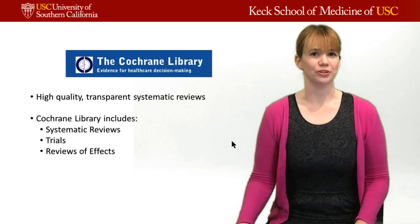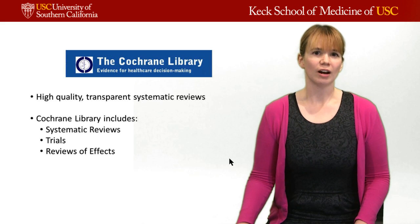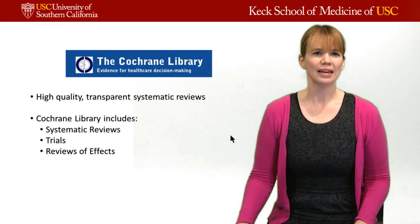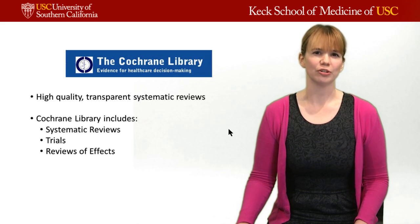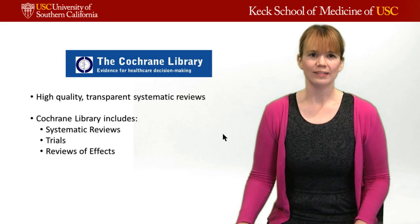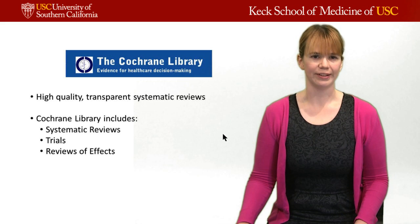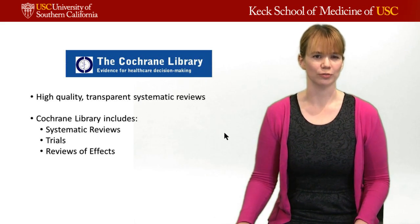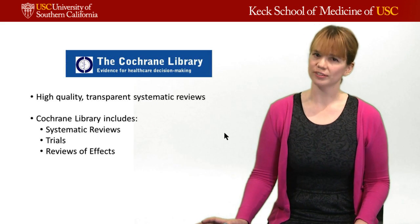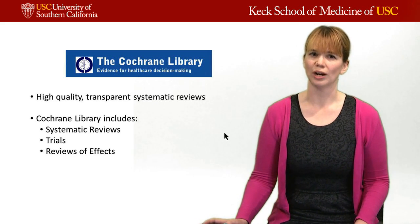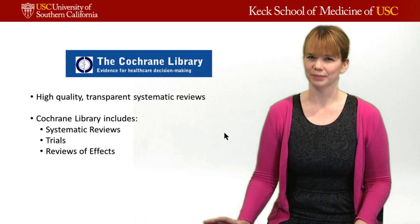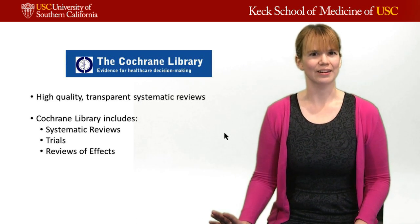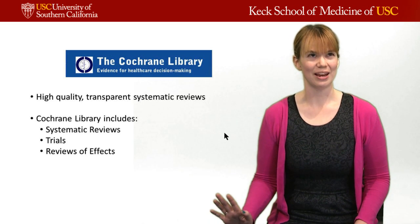Now I want to talk about the Cochrane Library, which has really become the gold standard for systematic reviews. They are high-quality and very transparent, and their entire handbook is available online for anyone to see the process used to create a systematic review. The Cochrane Library is more than just systematic reviews — it also includes trials and reviews of effects, meaning people read articles and assess them for you.